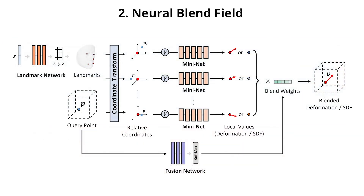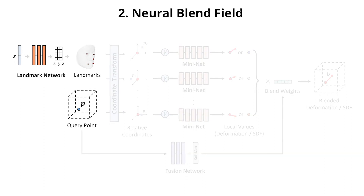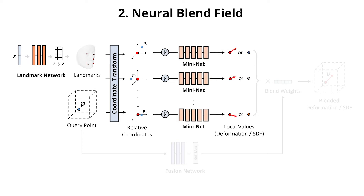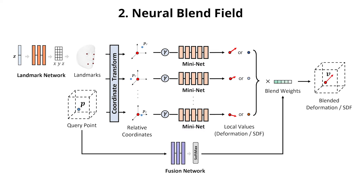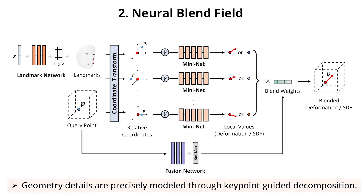Moreover, to boost performance on local details, we further introduce a neural blend field. For each space, we first predict facial landmarks to define different local regions and transform the query point to corresponding relative coordinates. Next, face-specific networks predict local values according to local coordinates. To obtain the final result, a lightweight fusion network predicts blend weights and calculates the weighted average as output. By keypoint-guided decomposition, fine details are precisely modeled with reduced parameters.